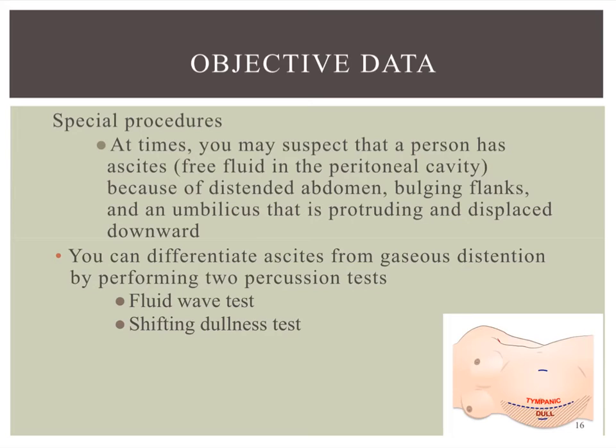There are a few specialty tests you can do as nurses. If you think someone might have ascites — where they have free fluid in the peritoneal cavity — with a distended abdomen, bulging flanks, and a protruding umbilicus, you can try to determine whether that's caused by fluid or by gas distension. Two tests you can do are the fluid wave test and the shifting dullness test.